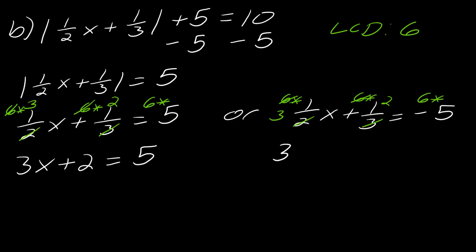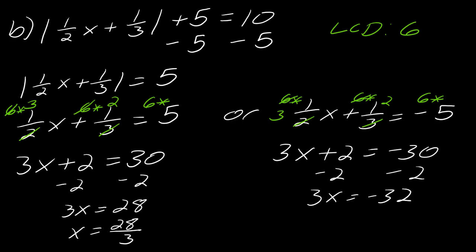So this becomes 3x plus 2 equals 5. And this is 3, oh, sorry, not 5, 30. My bad. 3x plus 2 equals 30. And 3x plus 2 equals negative 30. And now I can solve as usual. So I'll go ahead and do that. And so these just left me with two fractional answers. I can't actually reduce them any farther. But these would be my two solutions. And then that would be it for that one.